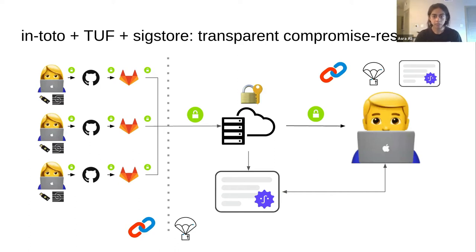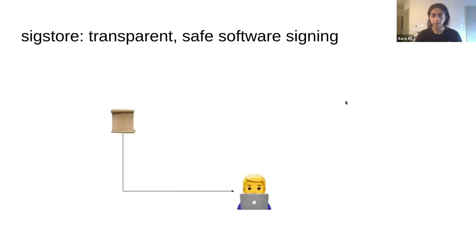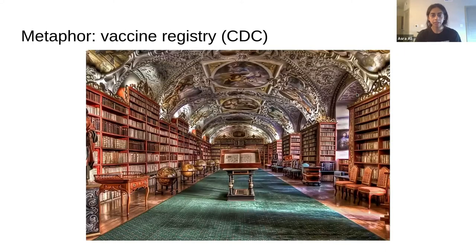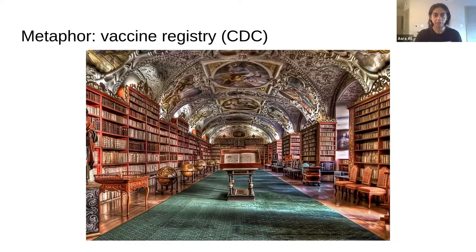Going back to our vaccine analogy, this is the role of the CDC. It's great that Pfizer is there and the FDA is there, but what really builds trust is a relationship over time with records — data that backs up the FDA's assertions and Pfizer's assertions. Sigstore brings things from 90% to 100% and more. You're able to see that history, and it provides people with accountability. That's the kind of role it plays in the In-toto and TUF complementary realm.